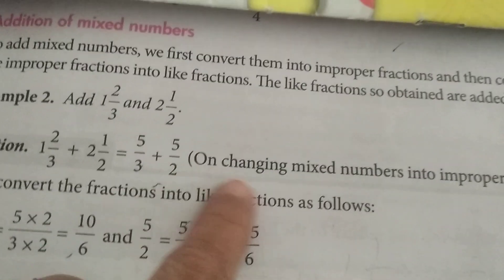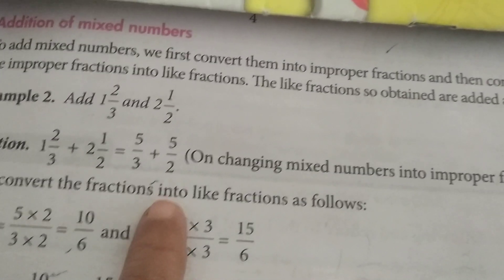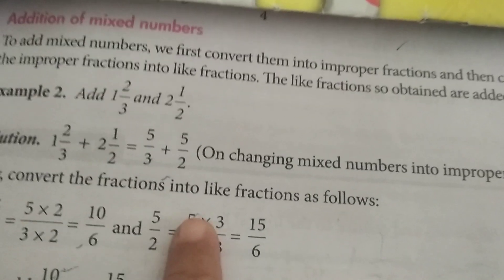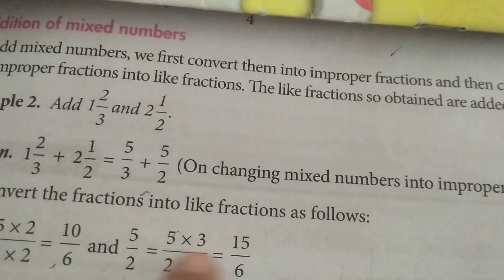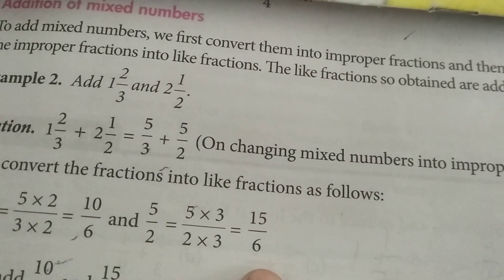And here, 2 times 3 is 6. Both the numerator and denominator we are multiplying by 3. So 5/2 is equal to 5 times 3 divided by 2 times 3 is equal to 15/6.